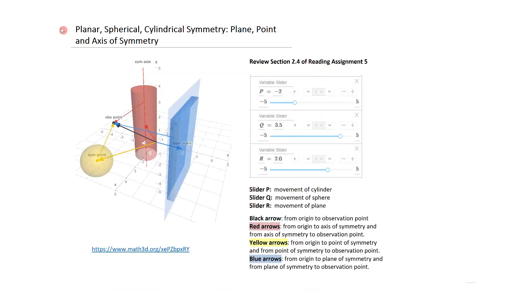Let's discuss what we mean by the various symmetries we'll be dealing with when we apply the Divergent Theorem. We have planar symmetry, spherical symmetry, and cylindrical symmetry. Associated with each one of these particular objects, we have a plane of symmetry, a point of symmetry, and an axis of symmetry, as seen from the diagram shown below.